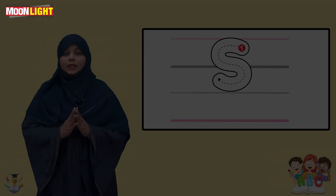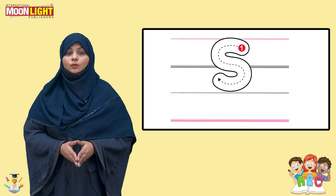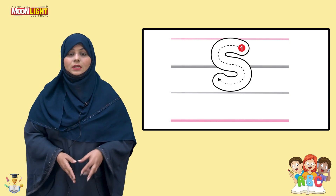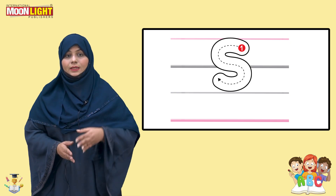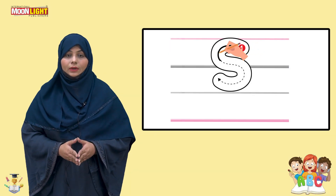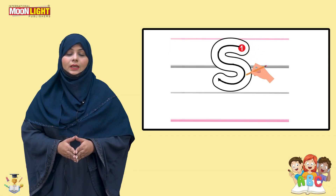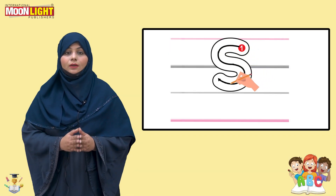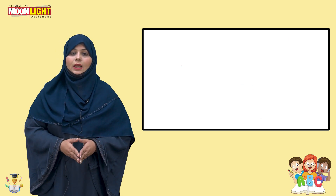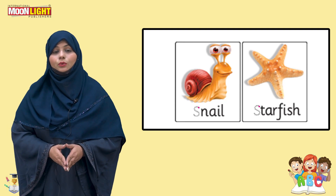Now there is a writing activity. First of all, ask your students to sharpen their pencil and follow the instructions you are going to give them. Never forget to tell that there are four lines — we are going to write capital letters in the upper three lines. Tell them there is a red dot; just follow the red dot and trace the dotted lines — it will become letter S.